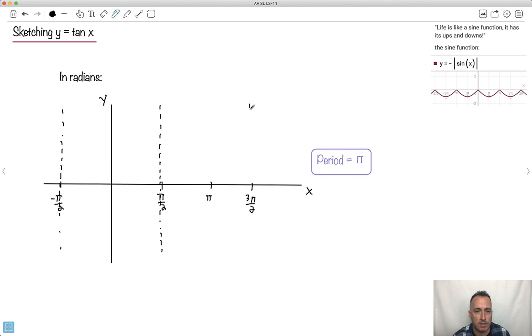And I have another asymptote here. Now what happens with tangent is it does this. This is just something that's worth knowing. It has a point here. It's going to have a point here. And it continues. But it basically goes like this. It goes like this. Something like that.